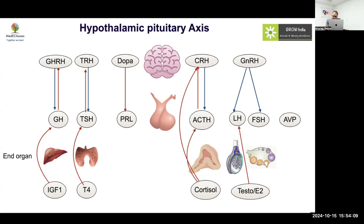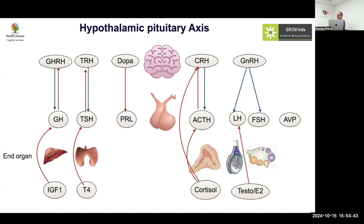One axis which is entirely different is the AVP axis. The hypothalamus is not merely regulating it — it is directly controlling it. It is so important that the hypothalamus has not even delegated this responsibility to the pituitary. The most crucial, most tightly regulated single parameter in the human body is osmolality — just a 1% change in osmolality is enough to cause havoc.